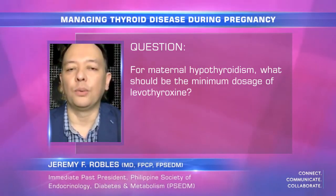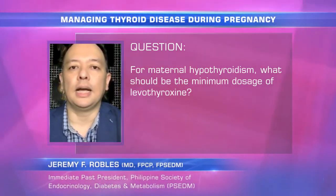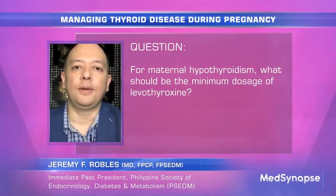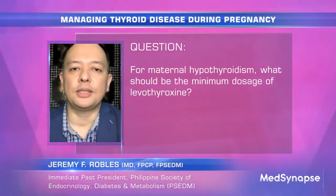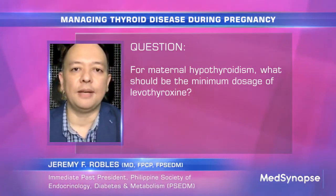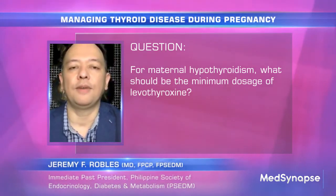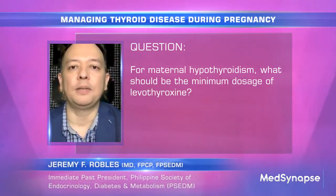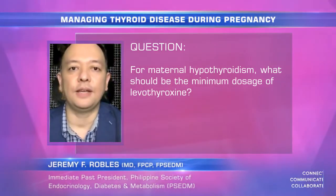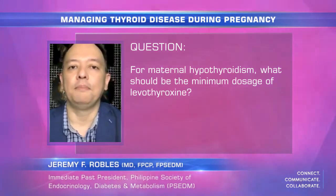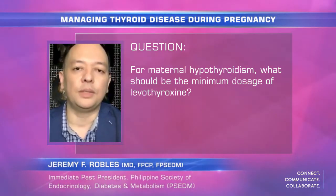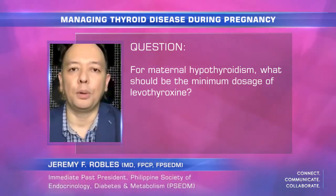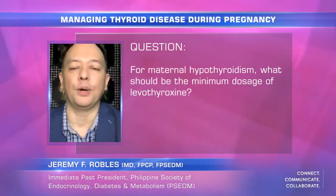All over the world it would be ideal to have trimester-specific values, but generally, if a population doesn't have these, we would like to keep the TSH below 2.5 — definitely below 4, which is already considered overt hypothyroidism.